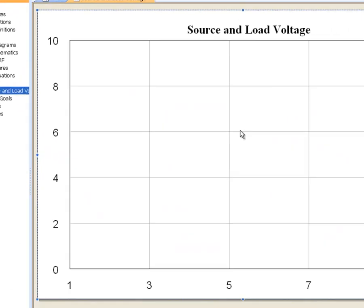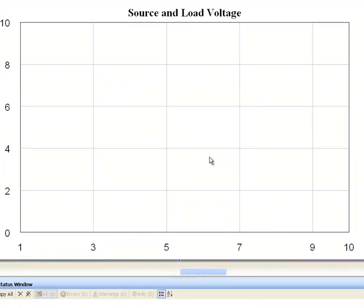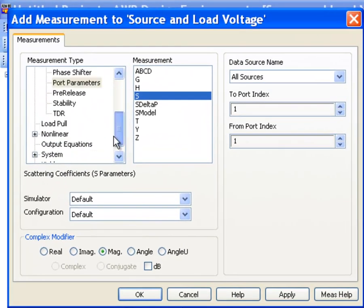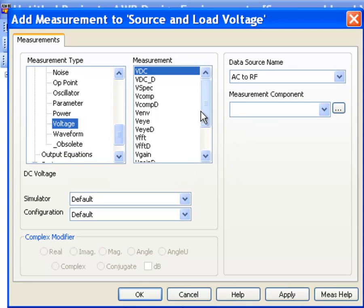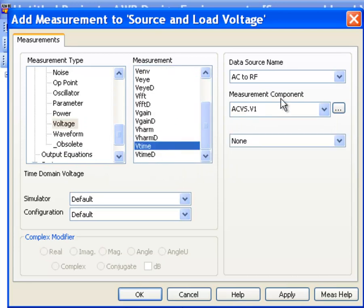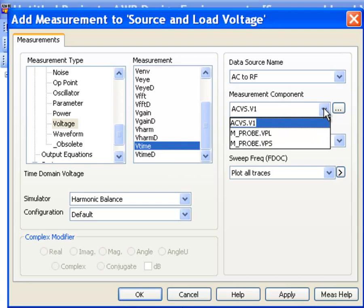If we click on the graphs again, go back to adding a new measurement and we'll go back to non-linear, get voltage and Vtime. And this time we can choose the measurement component without any ambiguity. We know that VPL is the load voltage and VPS is the source voltage.